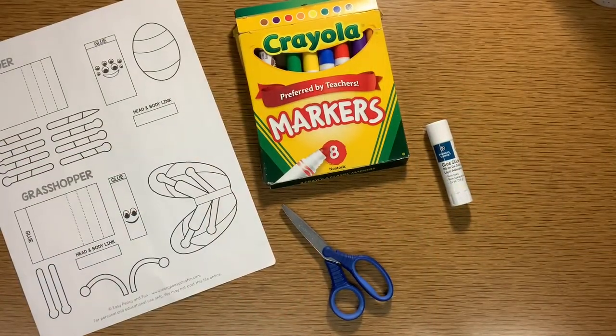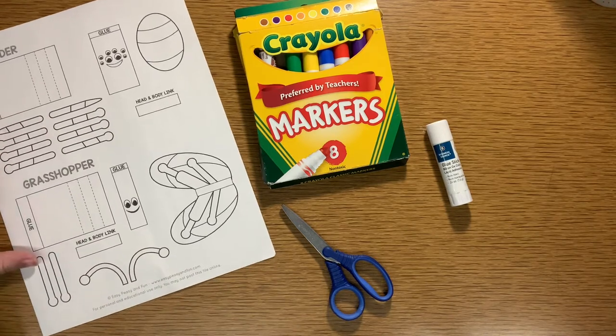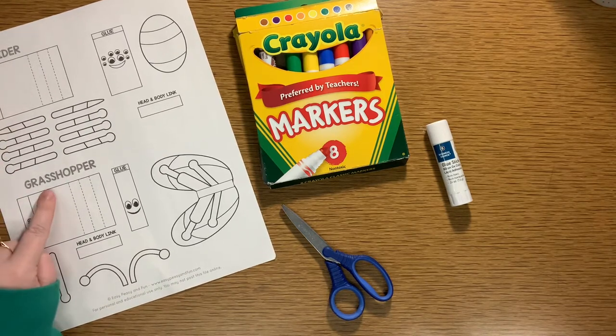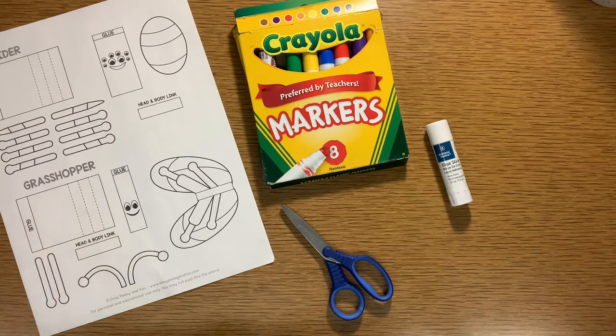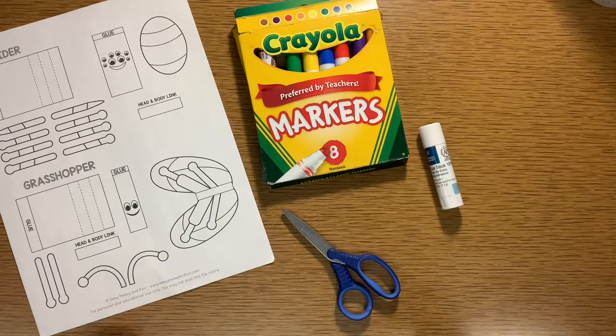To make the grasshopper puppet, here are the supplies you'll need. You're going to need one of these templates. It has a spider at the top and a grasshopper at the bottom. You're going to need something to color with, some scissors for cutting, and a glue stick for putting it all together at the end.